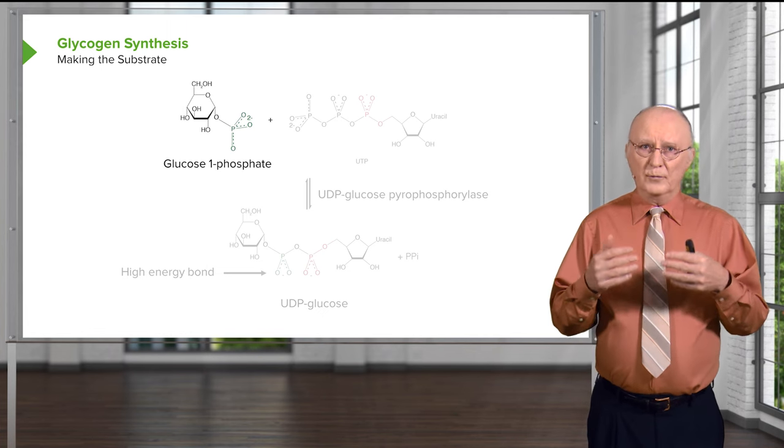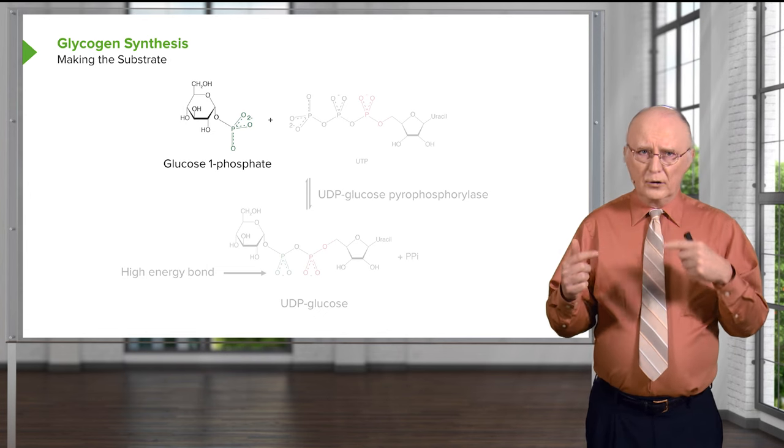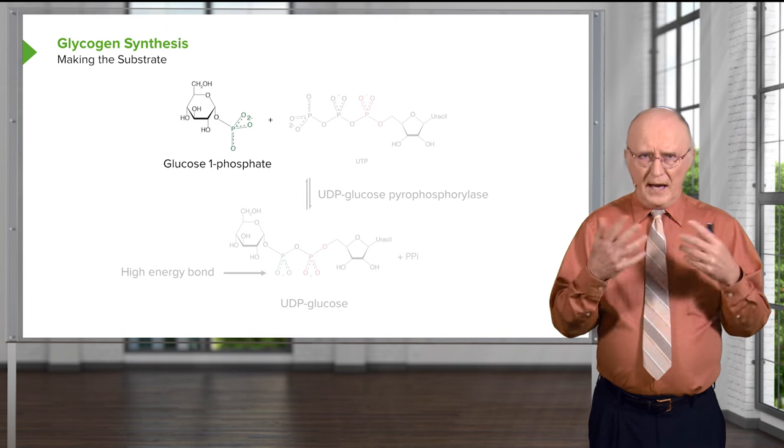And then phosphoglucomutase, which catalyzes the reversible reaction I showed earlier, can convert glucose 6-phosphate back to glucose 1-phosphate, as you see here.